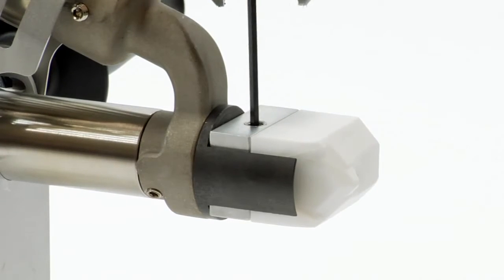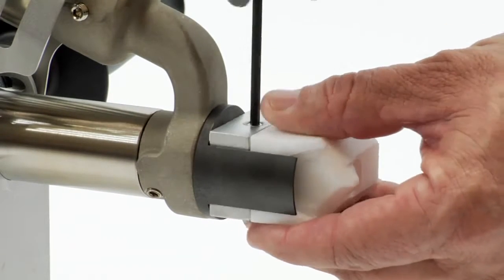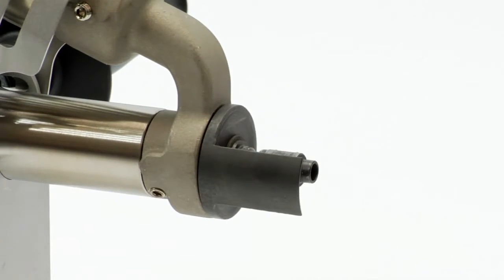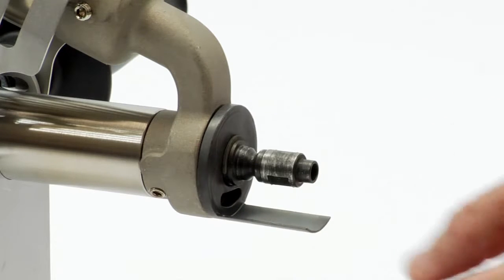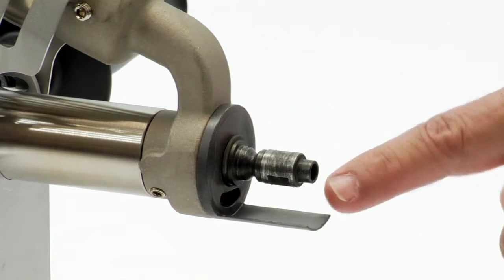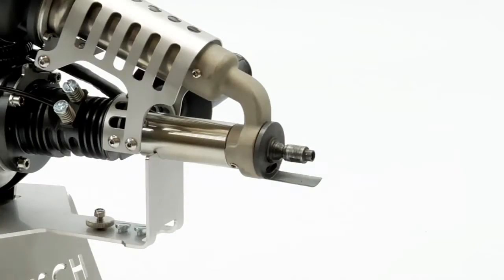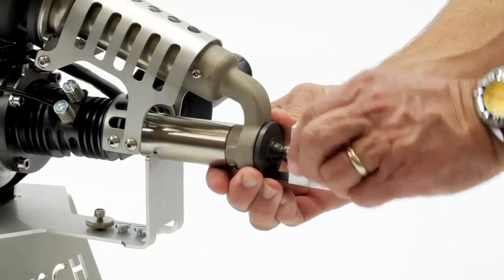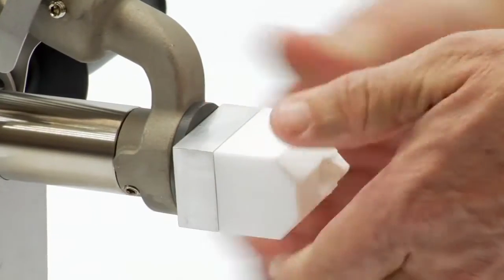Loosen the allen screw to adjust or remove the shoe from the nozzle. A snap ring must be removed if you want to take the preheat guide off. Set the shoe at the desired angle and tighten the screw.